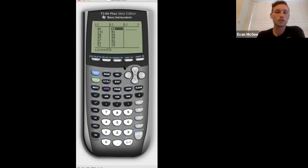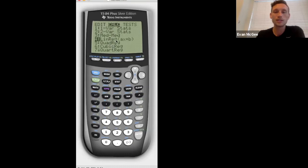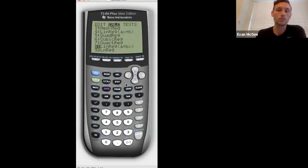To find the line of regression, we're going to go stat, calculate, and you can see here is line reg ax plus b. Here a is the slope, b is the y-intercept, but if you scroll down further, you can see the one that we said earlier, line reg a is the y-intercept, b is the slope. You can pick whatever one you want. I'll do the second one for now.